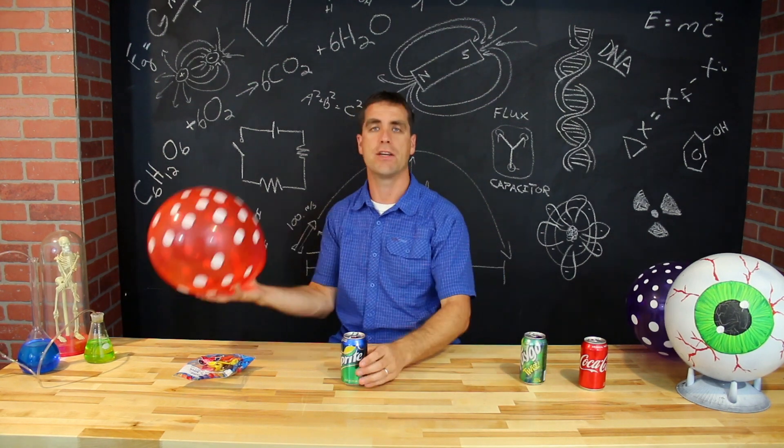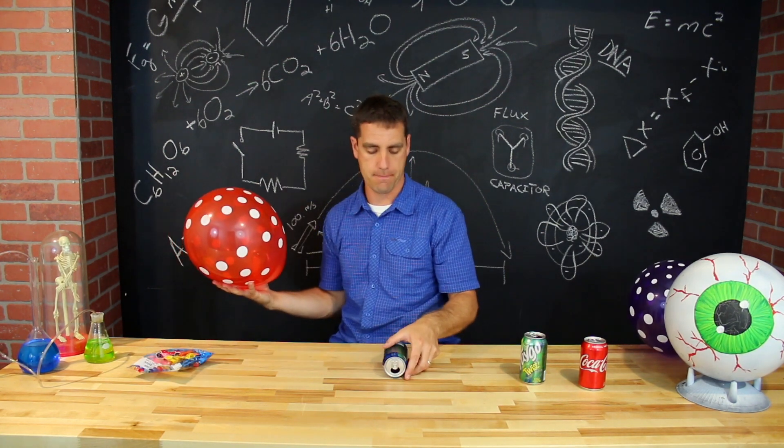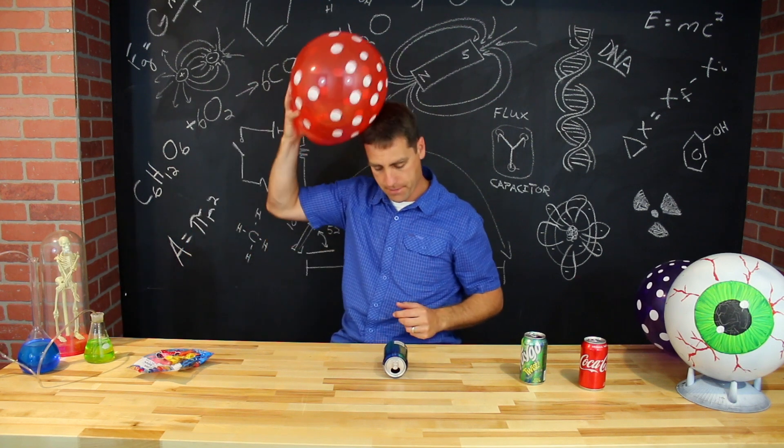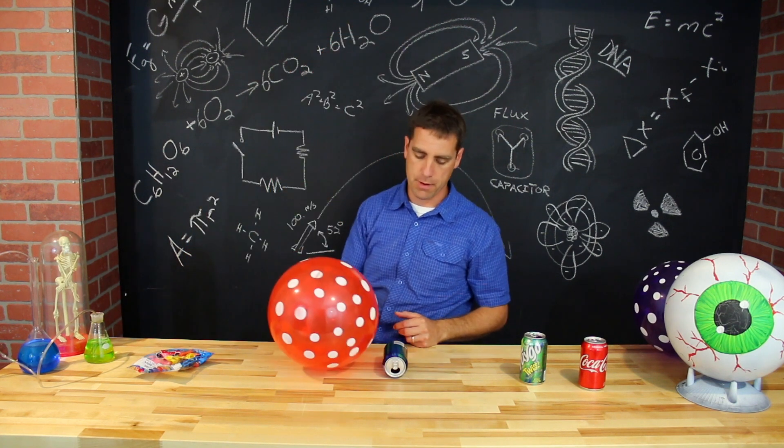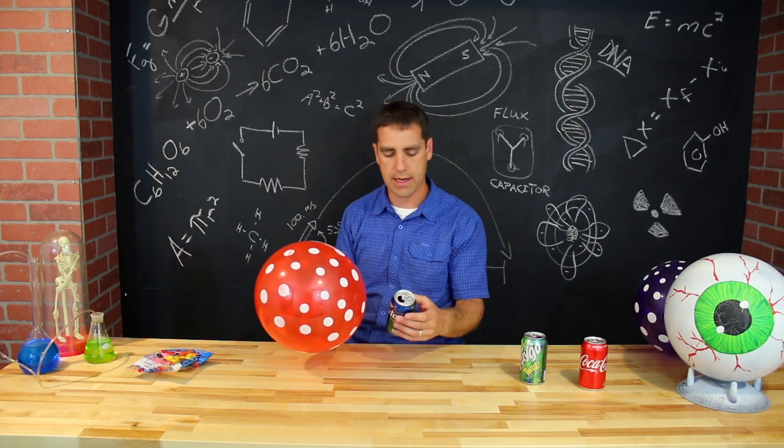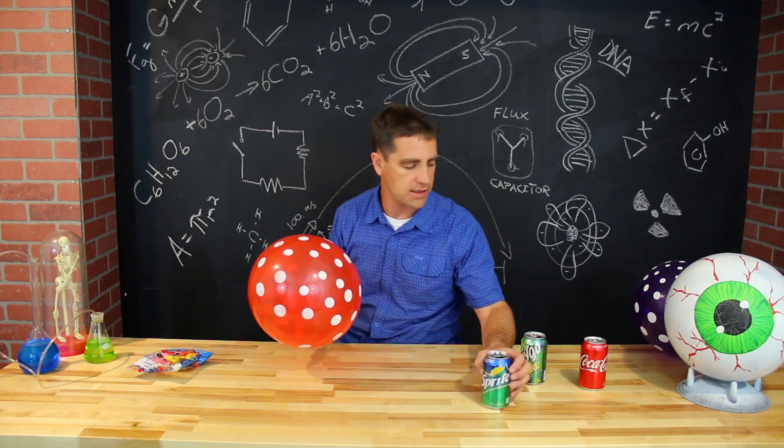To get the can to roll, here's our can. We're going to set it down right there, charge this up, bring it close to the can. Make sure the can doesn't have a dent in it.